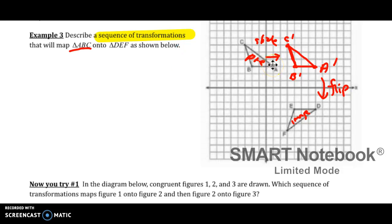So again, I could have reflected first and then translated. However, I saw the slide first, so I'm going to say a translation. And it's only a horizontal translation, so I'm going to see how many units. One, two, three, four, five, six.